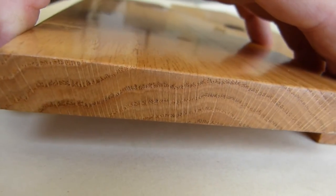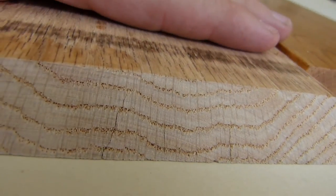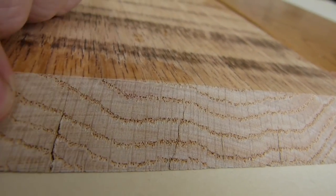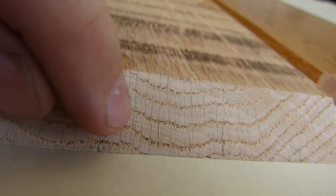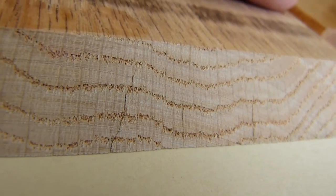The other end is not varnished, it's just plain, and on this one, the rays appear to be dark brown, instead of white. So those are the rays.